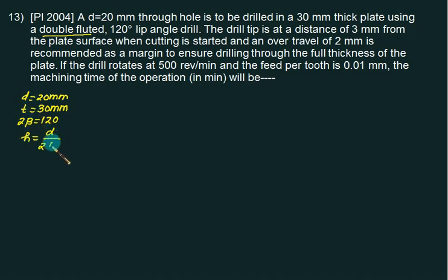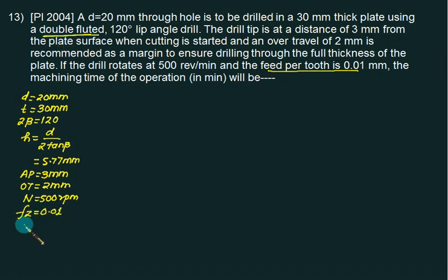H equals D by 2 tan of beta. D is 20, beta equals 60, so H equals 5.77mm. Drill tip is at a distance of 3mm from the plate surface, that is approach. Over travel is 2mm. Drill rotates at 500 RPM. Feed per tooth is 0.01mm. Since it's double fluted, F will be 2 times Fz, that is 0.02mm/rev.